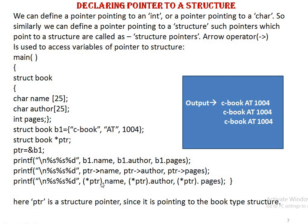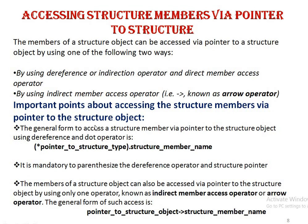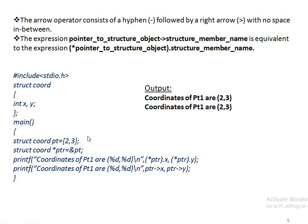The asterisk-dot combination can be replaced by the arrow operator. The arrow operator is not a keyboard key directly — it is the minus symbol and greater-than symbol combined. Pointer-to-structure member variables are accessed using the arrow operator: ptr->x means we are printing the value of member x of the structure variable whose address is stored in ptr.